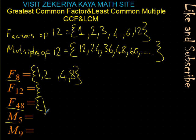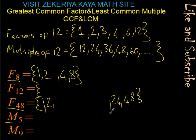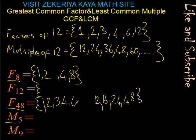Now factors of 48 — this will be longer with a big number. 1 times 48, 2 times 24, 3 times 16, 4 times 12. 5 times — no, 6 times 8. 7 times — no. When we check 8, it repeats what we already have. So the factors of 48 are: 1, 2, 3, 4, 6, 8, 12, 16, 24, and 48.